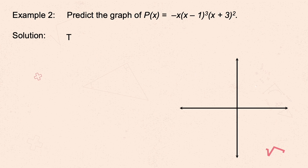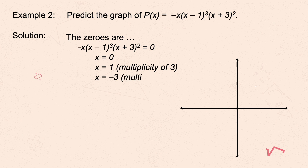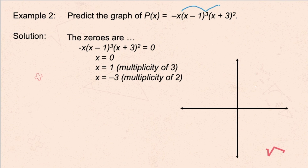For the next problem: predict the graph of p(x) = −x(x − 1)³(x + 3)². First, let's identify the degree by multiplying the exponents of x: 1 + 3 + 2 = 6, which is even — so the graph goes either up or down on both ends. Since the leading coefficient is negative, the graph goes downward on both ends.